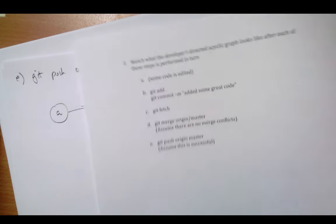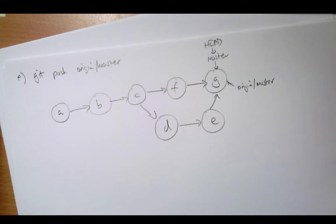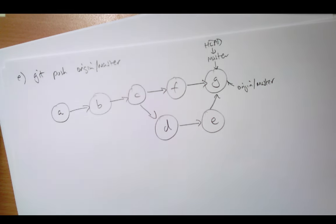That was the last step, and that is the solution video for the Week 4 tutorial — an exercise in understanding how the directed acyclic graph of your git history changes as you perform particular common git commands.